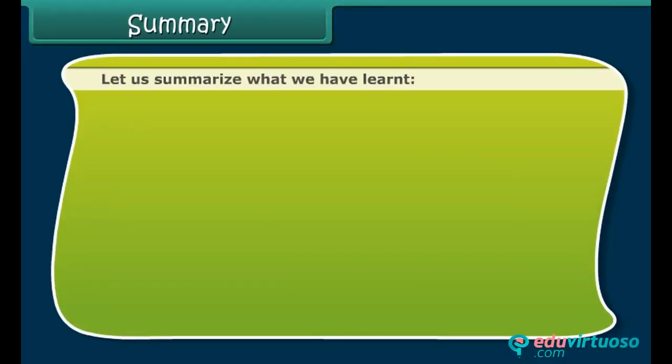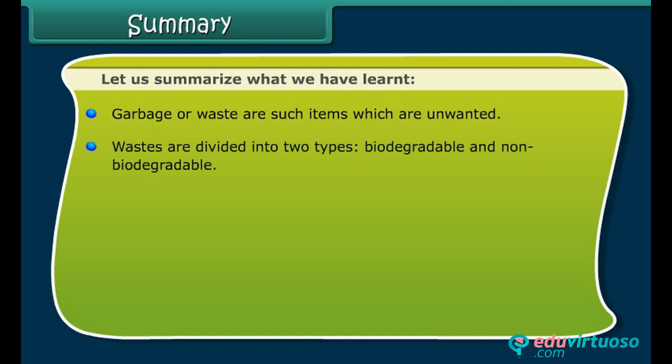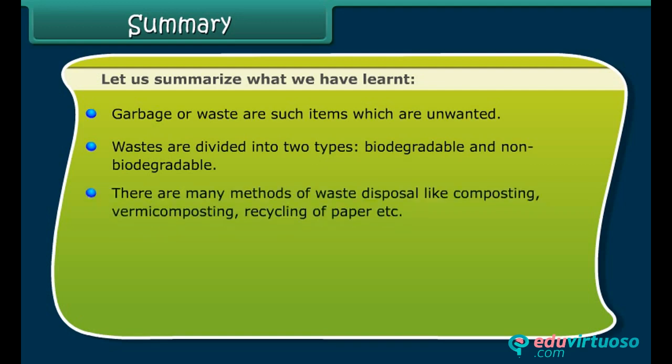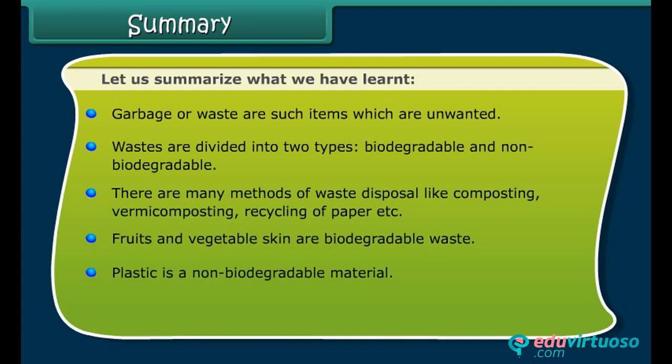Let us summarize what we have learned. Garbage or waste are such items which are unwanted. Wastes are divided into two types: biodegradable and non-biodegradable. There are many methods of waste disposal, like composting, vermicomposting and recycling of paper. Fruits and vegetable skin are biodegradable waste. Plastic is a non-biodegradable material. The burning of all types of plastics produces harmful gases.